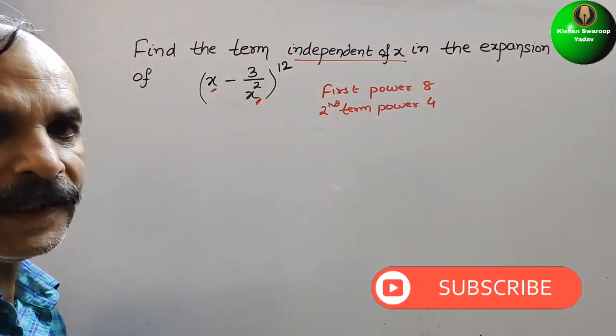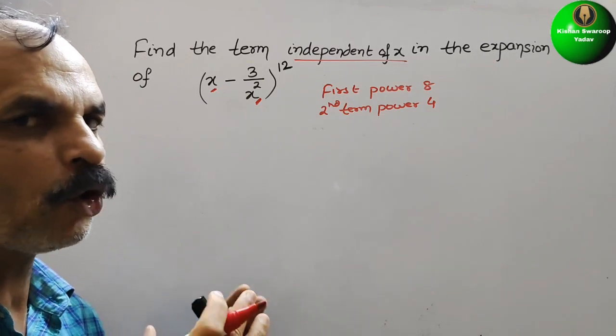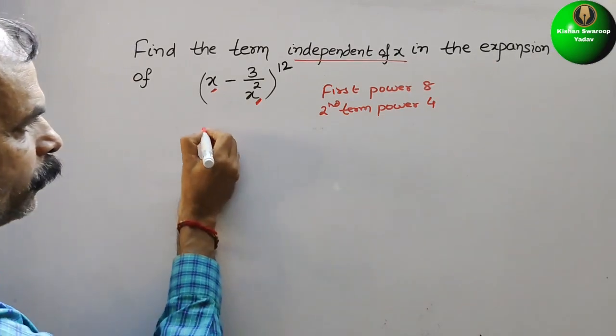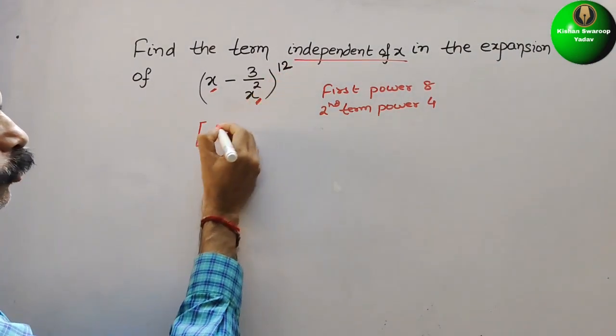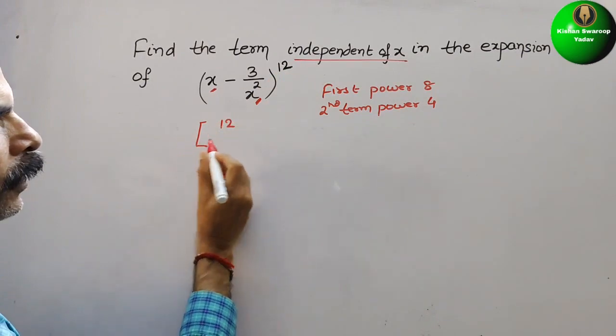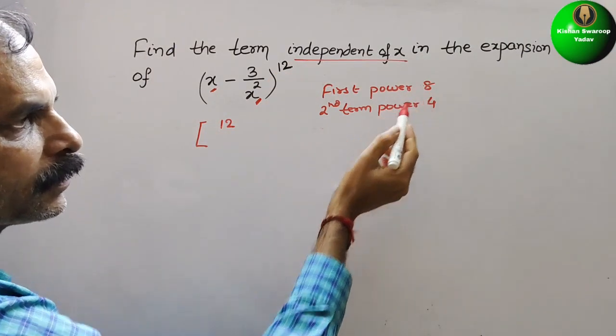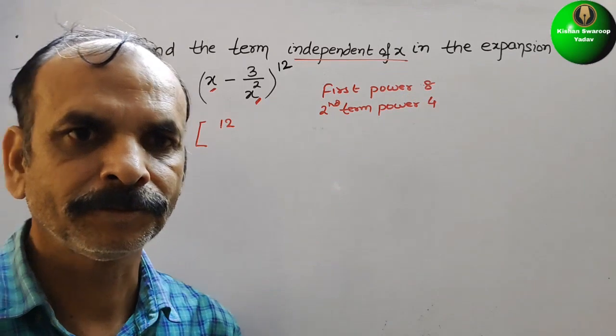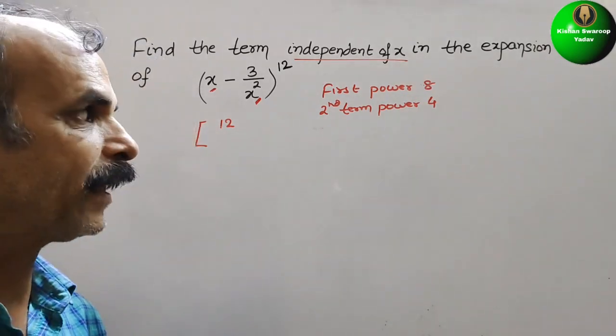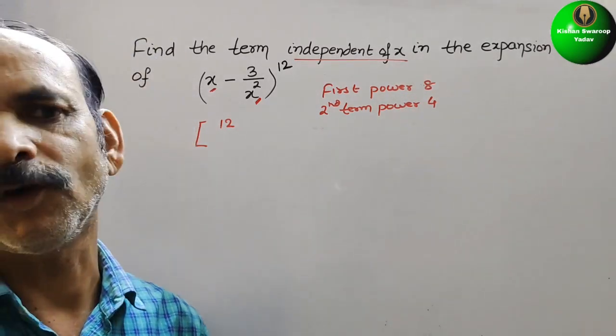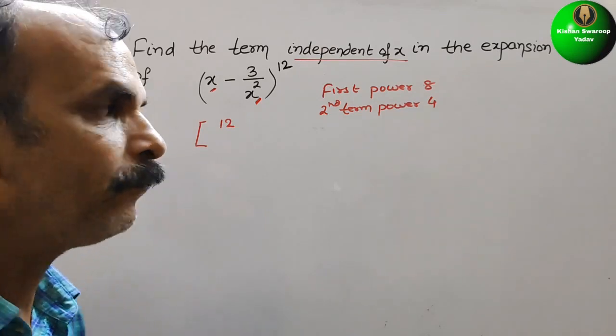So now if you write in your vector form the coefficient, what it will be? It will be nothing but 12 and in this you can take anyone. Either you can take 8 or you can take 4.